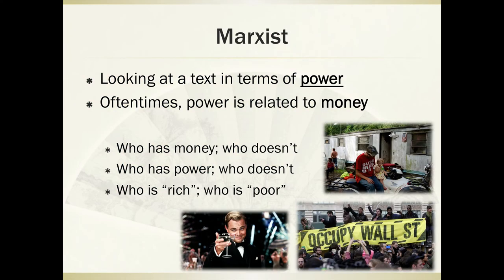The next lens is the Marxist lens — yes, named after Karl Marx, the communist writer of the early 20th century. The idea is that the Marxist lens looks at a text in terms of power, and power is often related to money. Some questions it focuses on: who has money and who doesn't, who has power and who doesn't, who is rich and who is poor. Being rich or poor doesn't always connect to money — it could mean rich or poor in character — but they tend to relate. So we look at power, money, who has it, and who doesn't.